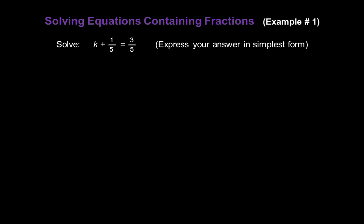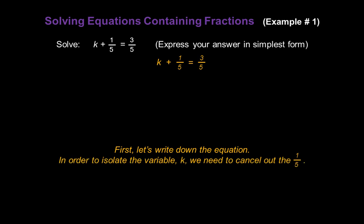Now let's take a look at some examples. Let's solve k plus one-fifth equals three-fifths and express the answer in simplest form. We start by writing down the equation: k plus one-fifth equals three-fifths. Now in order to isolate the variable k, we have to cancel out all of the numbers on the same side of the equation with k. In this case we only have one number and it's the fraction one-fifth.